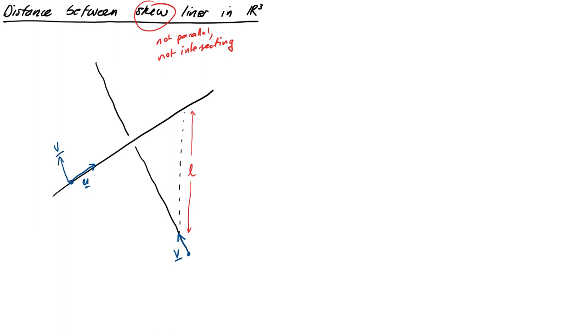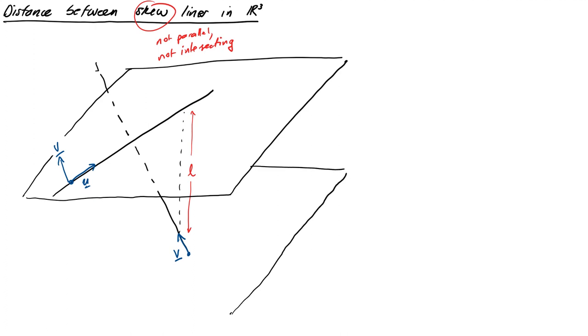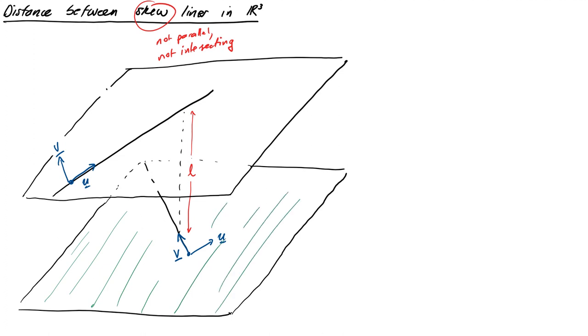Alright, so the magic here is we're actually going to turn this problem into our two parallel planes problem. So what we're going to do is we're going to have one plane which contains the first line and another one containing the second. And if you think about it for a moment, it's possible to define these two planes so that they are parallel. And the way to do that is to have the planes be parallel to both direction vectors simultaneously. Remember you need two direction vectors to specify a plane. So we're going to take the two direction vectors from our two lines to be the direction vectors for our two planes that are going to contain the lines.